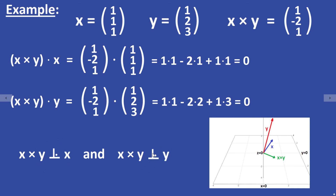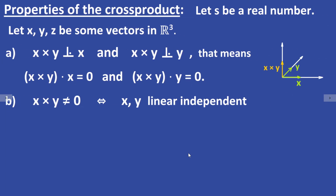Here is also an illustration of the vectors X, Y and the cross product of X and Y. The cross product of X and Y is not equal to zero if and only if X and Y are linearly independent.